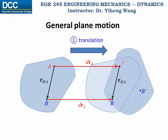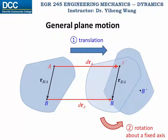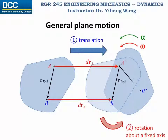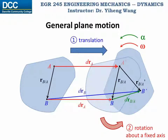For the second step of the motion, the object rotates about a fixed axis that is perpendicular to this plane and passes through point A with an angular velocity of omega and angular acceleration of alpha. This completes the general plane motion during time period dt. Now particle B has a new relative position with respect to A, and the change in its relative position is represented by vector drB/A. From vector addition, the displacement of particle B, drB, equals drA plus drB/A.